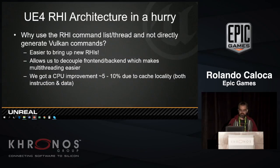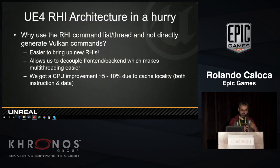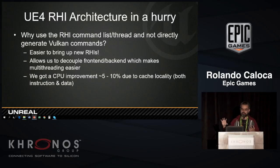Why do we want to use the RHI thread and not directly generate commands in parallel on the render? It makes it easier for us to bring up new RHIs. We also noticed a CPU improvement just by decoupling the data — working on the render code and data space, and then the RHI or Vulkan or D3D memory space. Just by detaching them, we got between 5 and 10% CPU performance improvement.